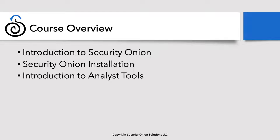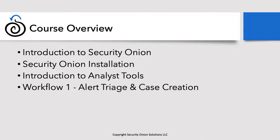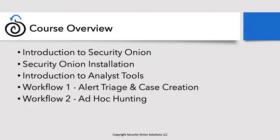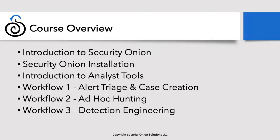We'll finish up with three common workflows you'll use as an analyst within Security Onion. The first is alert triage and case creation — you log into Security Onion, look at your alert queue, triage, and determine whether this is a legitimate issue. If you decide it is an issue, you escalate that into a case. The second workflow is ad-hoc hunting, where you start with a question or hypothesis and look through the data in Security Onion to answer it. The third workflow is detection engineering — a process of developing new detection strategies within Security Onion itself.